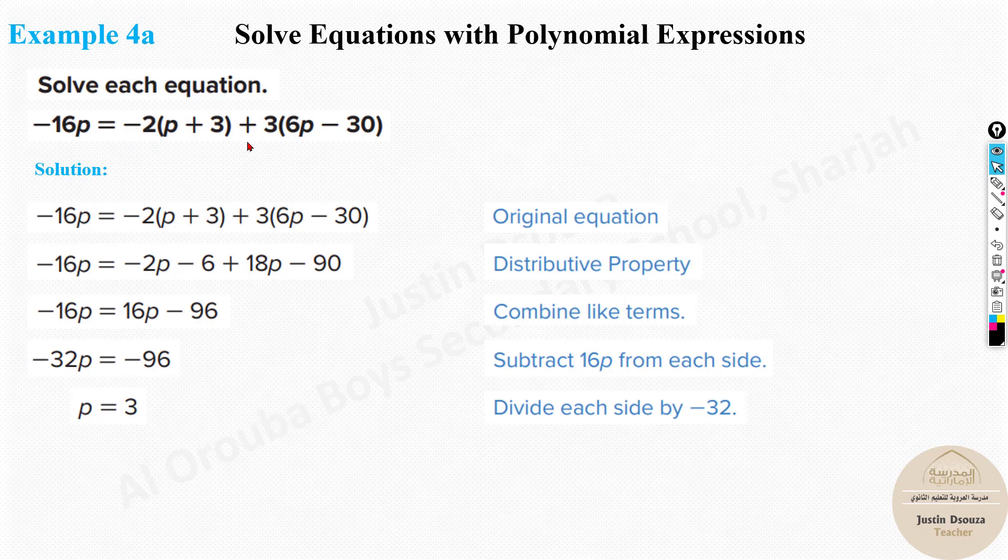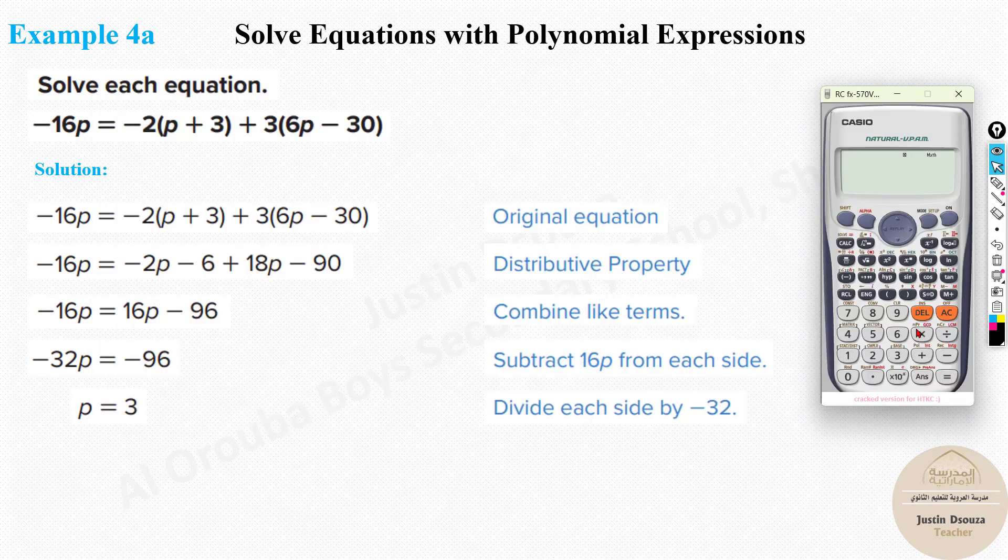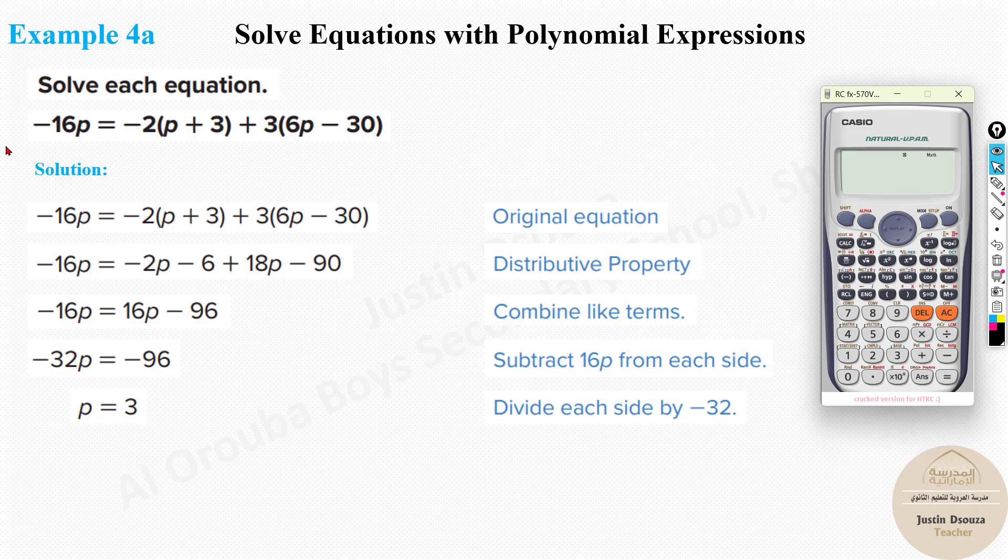Now, since one variable is unknown, that is only p value, you can put it in the calculator and solve. If there were two variables, two unknowns, p and q or x and y, you cannot solve this. Since it's only one, I will write it as it is in the calculator. It's always better to clear your calculator before you start. Now, minus 16. There is no p option. There is unknown variable as x. Let's consider p to be x. Minus 16p equals minus 2 bracket p plus 3. Close the bracket. Plus 3 bracket 6 alpha x minus 30. Close the bracket. Press shift and solve.